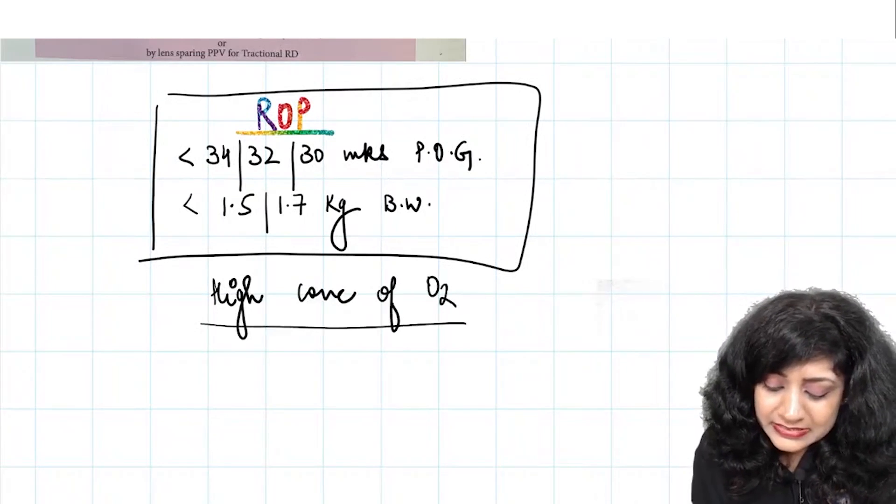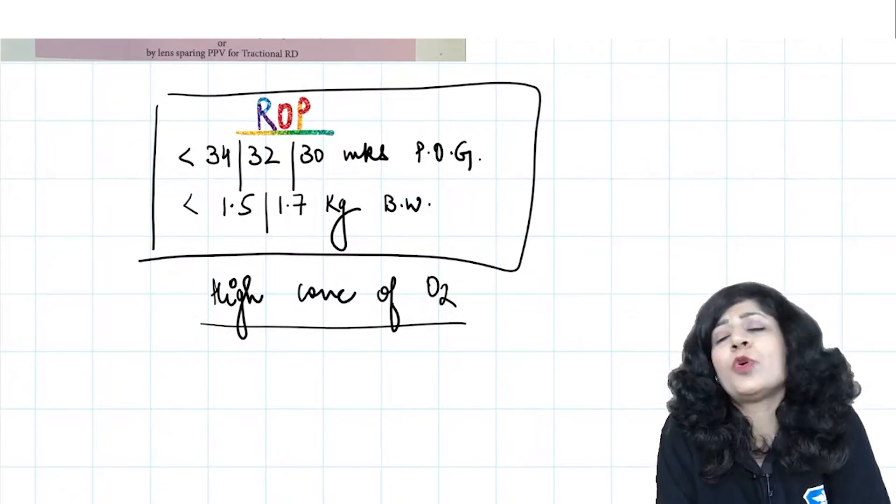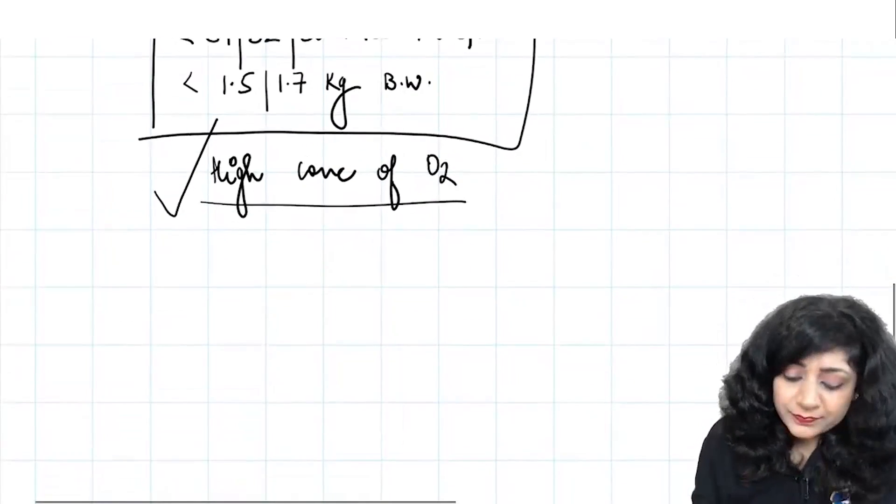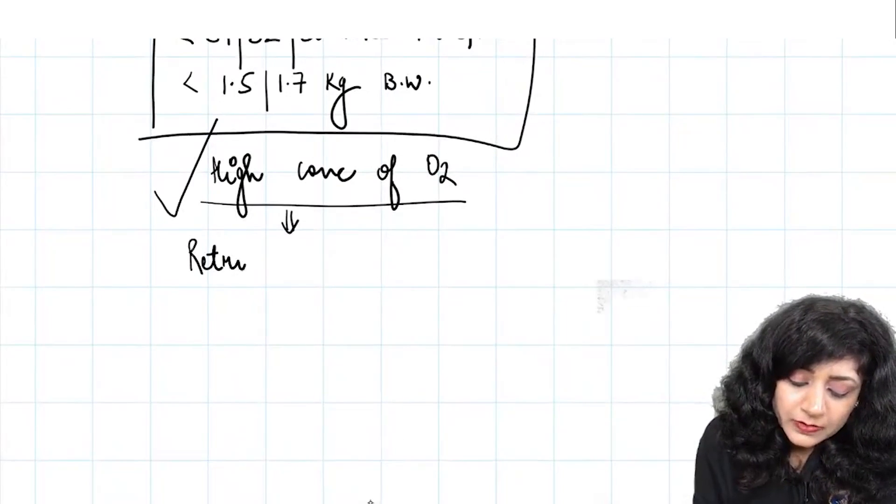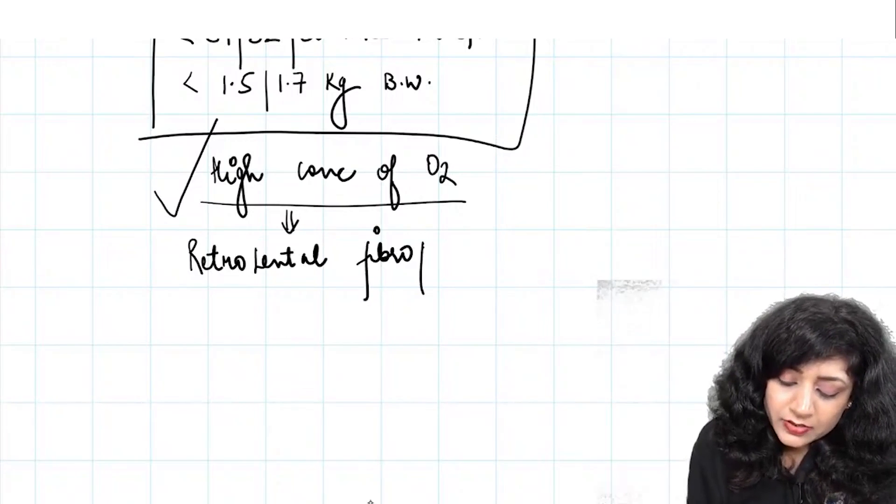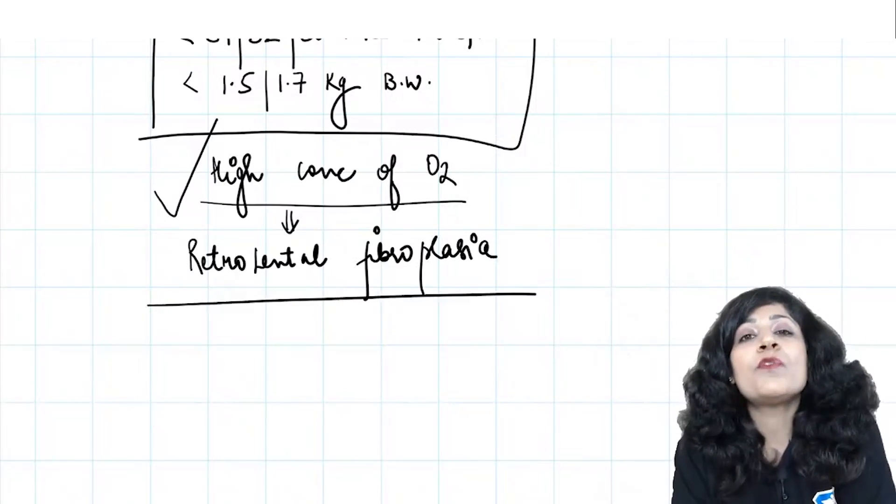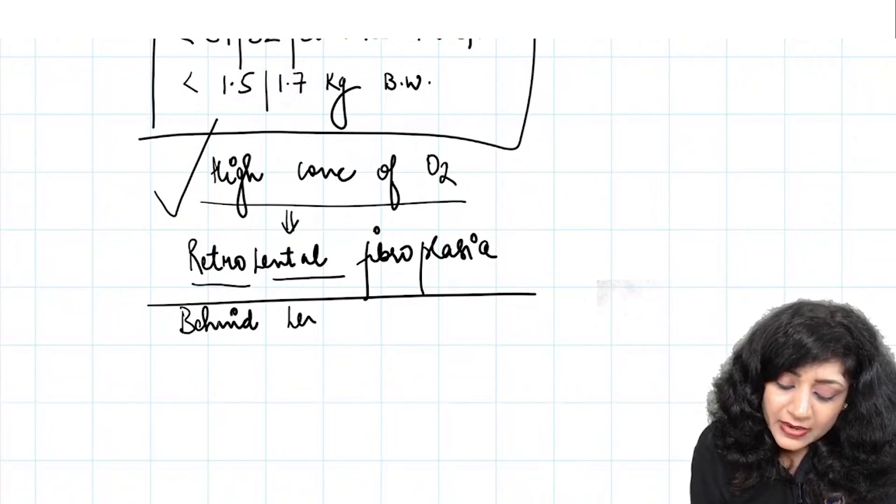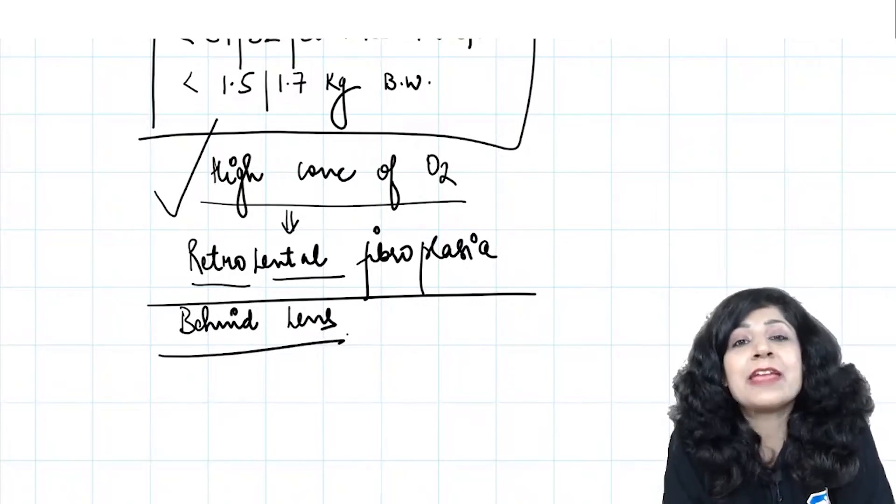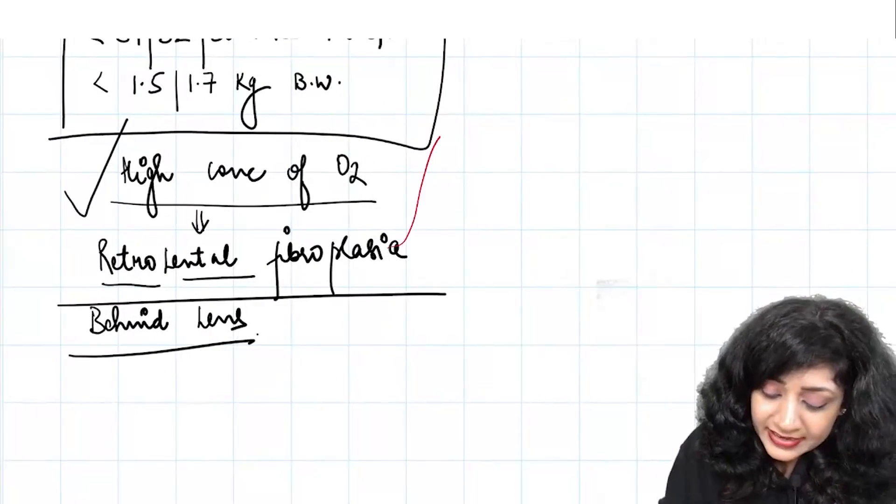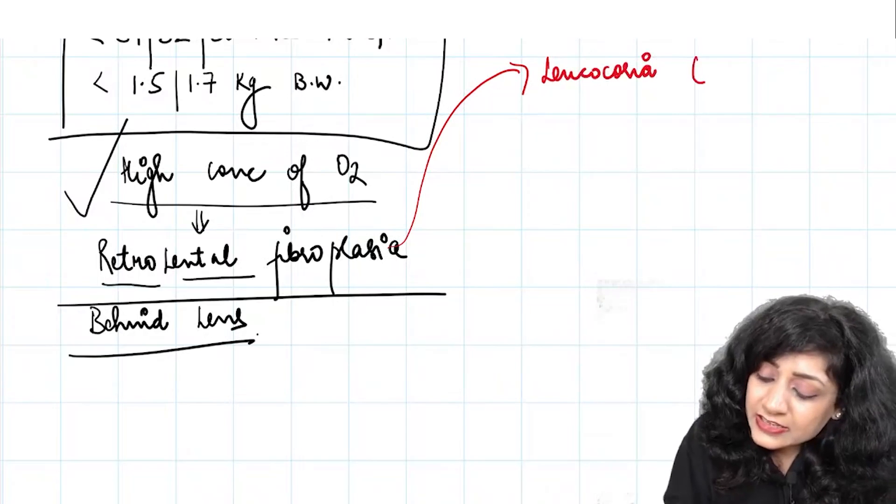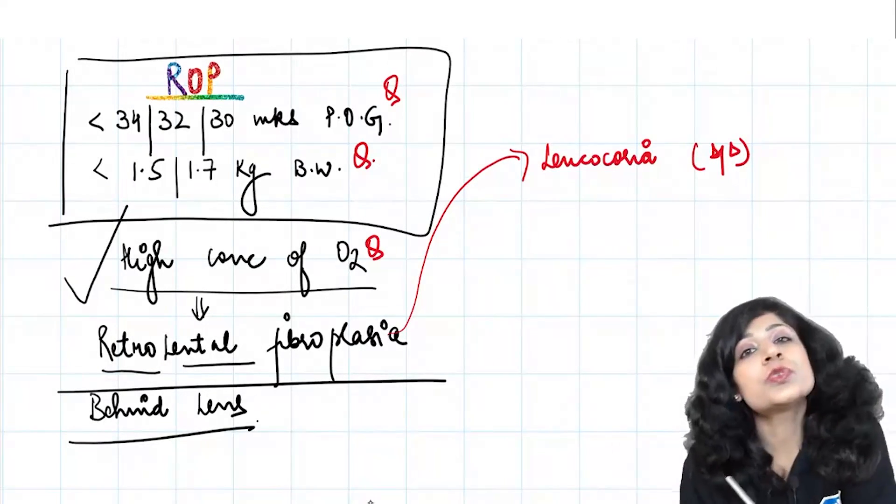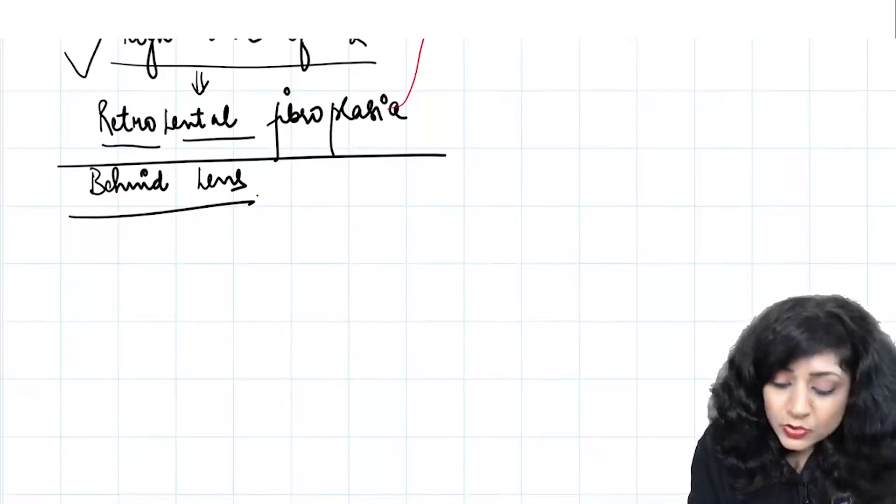If this kind of baby is exposed to high concentration of oxygen, usually in incubators at the pediatrician site, then we will have retrolental fibroplasia. We have a high degree of fibrovascular proliferation behind the lens, therefore it's called retrolental fibroplasia. That's the reason it leads to leukocoria. It's also an important differential diagnosis of leukocoria. Should I treat this? Yes, you have to look at the stages.